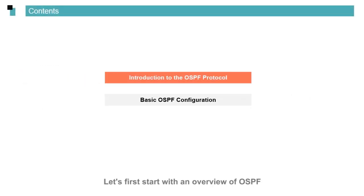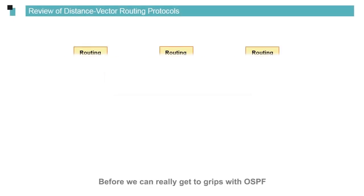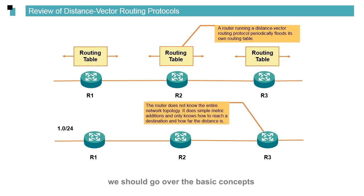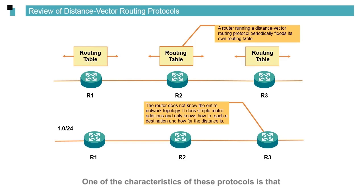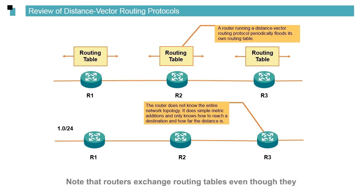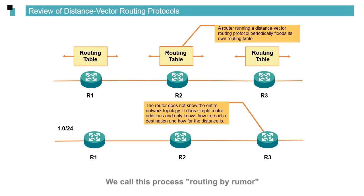Let's first start with an overview of OSPF. Before we can really get to grips with OSPF, we should go over the basic concepts behind distance vector routing protocols. One of the characteristics of these protocols is that a router running a distance vector routing protocol floods its own routing table to other routers. The routers exchange routing tables and learn routes from each other, even though they are unclear of the entire network topology. We call this process routing by rumor, which is a defining feature of distance vector routing protocols.